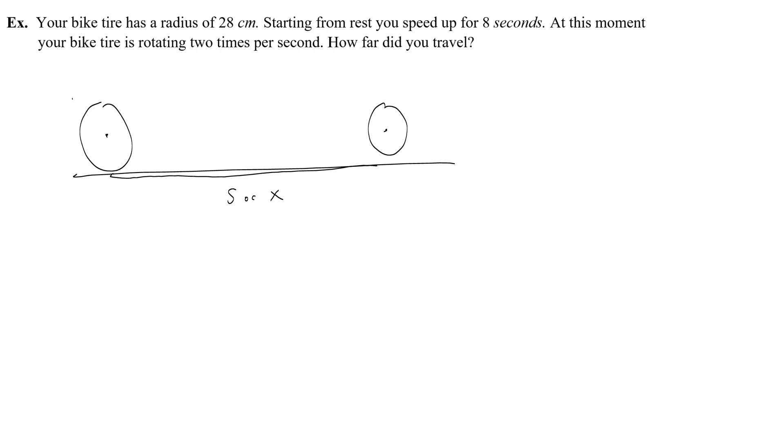So we want to find S, the arc length, because that's effectively our linear distance traveled. To do that, we are going to need to know the angular position and the radius. So the radius isn't 28 centimeters, it's half of that, which would be 15 plus 4 is 19 centimeters, or 0.19 meters.